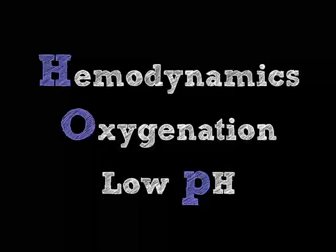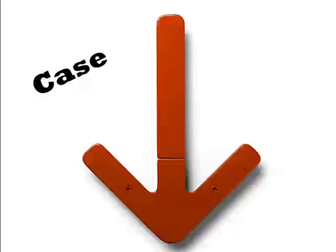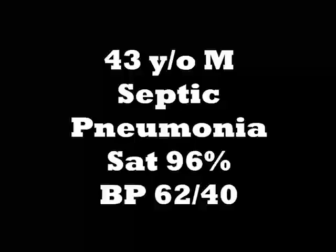Today we're going to deal with the hemodynamic kills. Let's start with a case. It's a 43-year-old male with sepsis, severe sepsis. He's got a pneumonia, probably MRSA. His SATs are maintaining for now, but his blood pressure when you look at the monitor is crappy — 62 over 40. You're intubating the patient for expected clinical course and poor mental status. How are you going to do it safely?